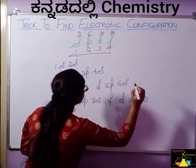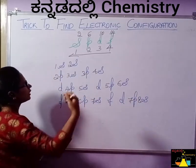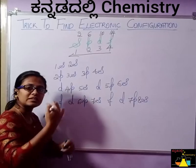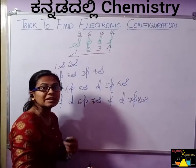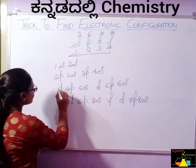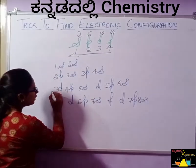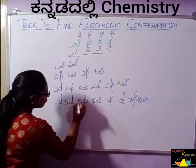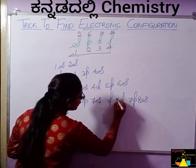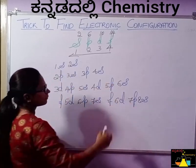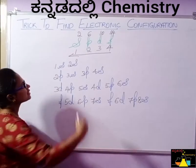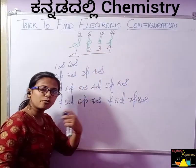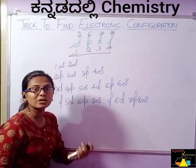Next D: again 3 and again 3 and again. So 3 in the end of the number, increase: 3, 4, 5, 6. Next last one is F. F position is 4, so 4 in the end of the number, increase: 4, 5.